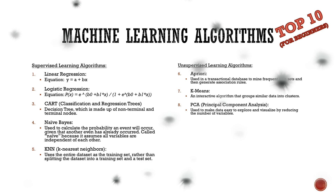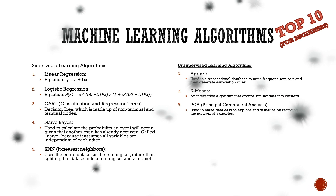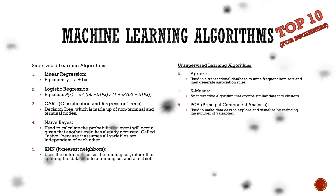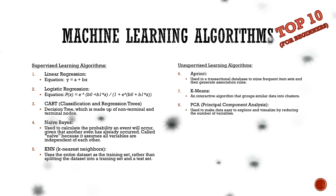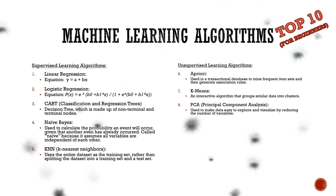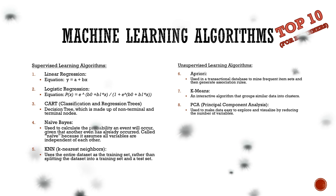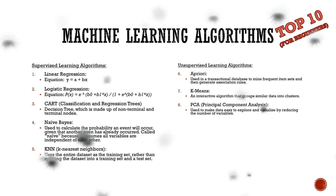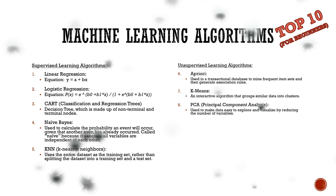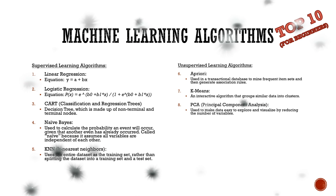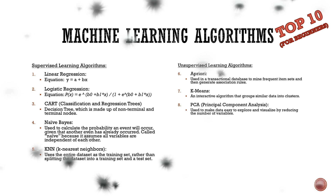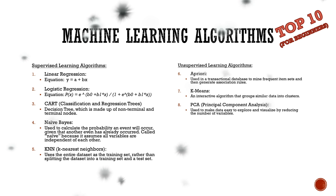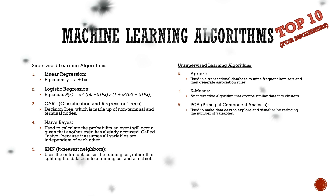The next three algorithms fall into unsupervised learning. First is the Apriori algorithm, which uses a transactional database to mine frequent item sets and then generate association rules. The Apriori principle guides the support measure for this algorithm: if an item set is frequent, then all of its subsets must also be frequent. For example, if a person buys milk and sugar, then the same person is also likely to buy coffee powder. K-means is an iterative algorithm that groups similar data into clusters. Principal Component Analysis, known as PCA, captures the maximum variance in the data into a new coordinate system with axes called principal components, making data easy to explore and visualize by reducing the number of variables.